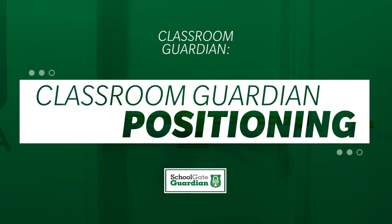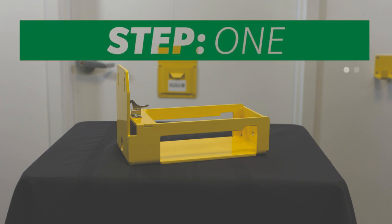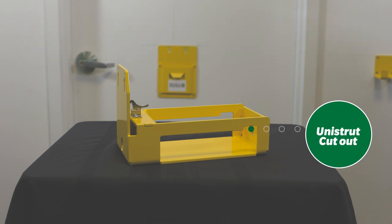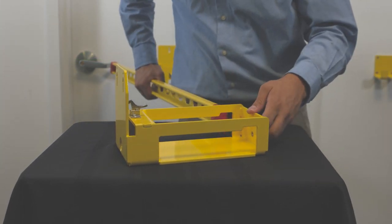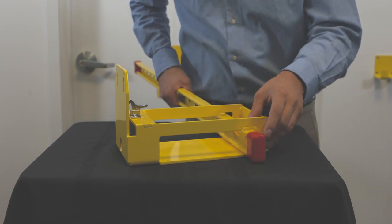Classroom Guardian Positioning - Step 1. Lay the Classroom Guardian flat side down with one of the sides facing you. Notice the Unistrut Cutout. Fit Unistrut into the Unistrut Cutout near the endplate. Unistrut front should be facing the endplate.